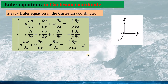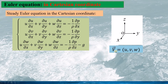As we know, Bernoulli's equation is derived from the Euler equation, and the general Bernoulli's equation is based on the steady Euler equation. This is the Euler equation in Cartesian coordinates, and the velocity vector v has three components u, v, and w, along the x-axis, y-axis, and z-axis respectively.